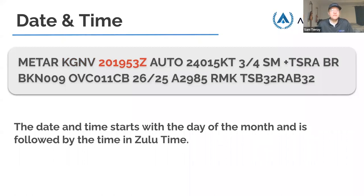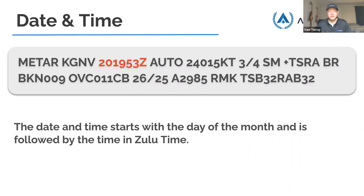Moving forward with the date and time. The date and time starts with the day of the month followed by the time in Zulu time. Here we have the 20th day of the month at 1953 Zulu. Zulu time is Greenwich Mean Time — the time zone in England. Aviation always runs Zulu time so that flying between time zones you're all on the same reference. Eastern Standard Time is minus five Zulu. Just know the first two numbers are the date. METARs typically come out about 53 minutes past the hour.